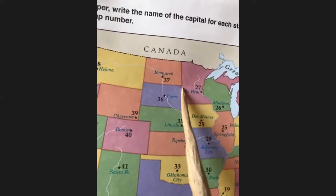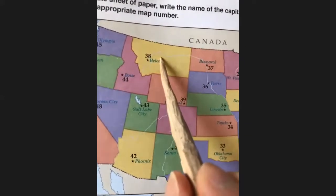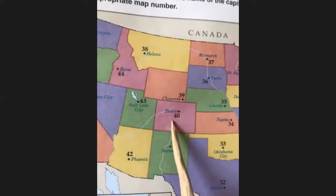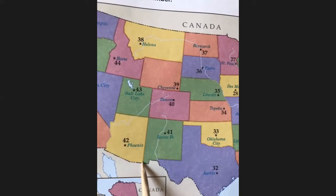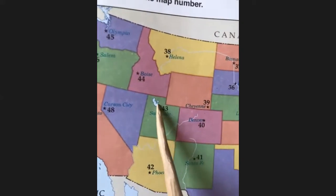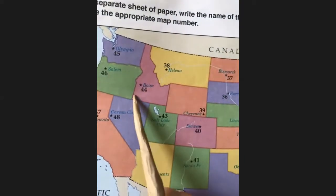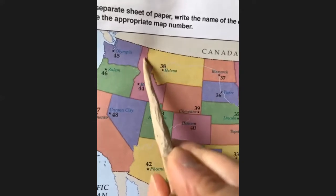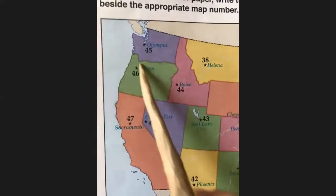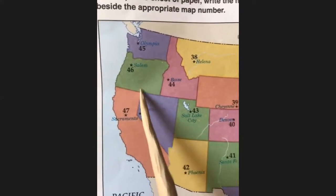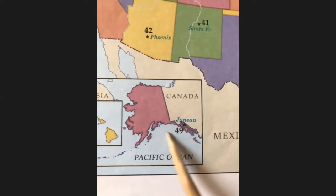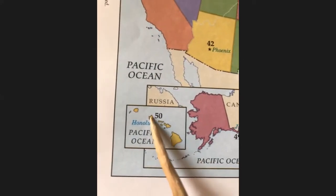Phoenix — Arizona. Salt Lake City — Utah. There's the Great Salt Lake. Boise — Idaho, because of the cabin with the chimney shape in Idaho. Olympia — Washington. Salem — Oregon. Carson City — Nevada. Sacramento — California. Juneau — Alaska. Honolulu — Hawaii.